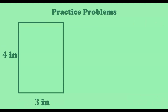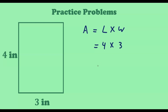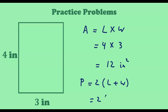Now let us determine the area and perimeters of some practice rectangles. For the first rectangle, the length is 4 inches and the width is 3 inches. The area is length times width: 4 times 3 equals 12 square inches.